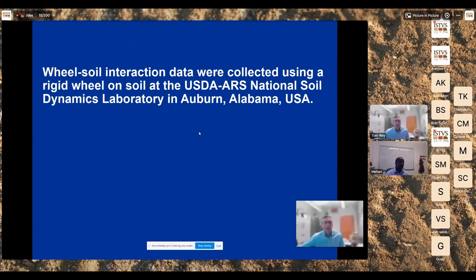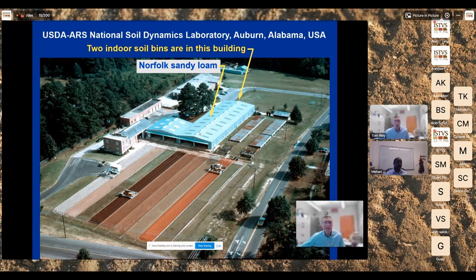This project deals with wheel-soil interaction data. Data were collected here in Auburn, Alabama at our soil bins using a rigid wheel. Our laboratory's major facility is the soil bin system. We have outdoor soil bins with various soil types ranging from very sandy sand to very heavy sticky clays, with sandy loams and one silt loam in between. Inside the long building with a silver roof are two indoor soil bins: a sandy loam and a clay loam. I'll focus particularly on the sandy loam results.